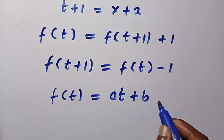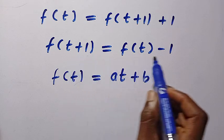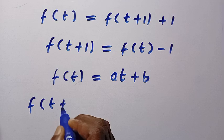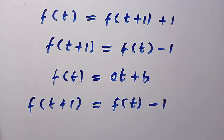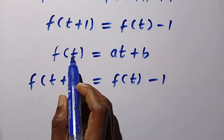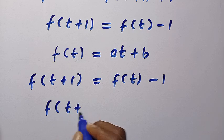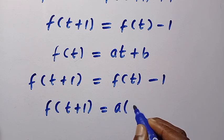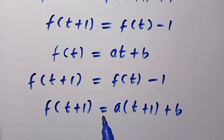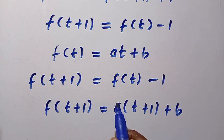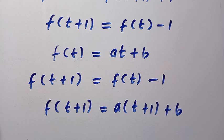Where a and b are constant values. Recalling that f of t plus 1 equals f of t minus 1, let's replace every t in f of t equals at plus b with t plus 1. We get f of t plus 1 equals a into bracket of t plus 1 plus b. Now we have two expressions: f of t plus 1 equals f of t minus 1, and f of t plus 1 equals a(t+1) plus b.